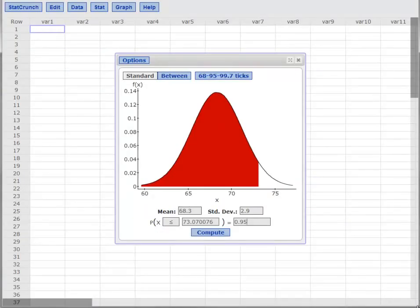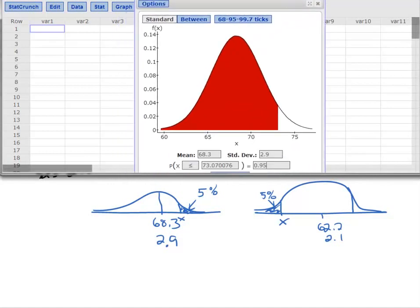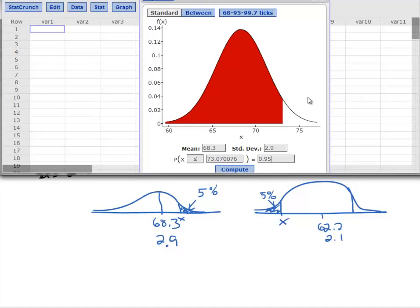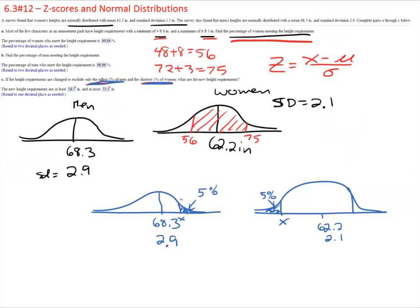So we will bring StatCrunch back up and I am going to shrink this up so we can see our picture and then move this up. Okay, so we will do the men first. They have a mean of 68.3, standard deviation of 2.9, but we want the probability, we want to know what is the cutoff so that x is greater than 5%. So you see the tail matches our picture. So that is saying if x is 73.07, that is going to be the cutoff. So this value here, this cutoff is 73.07, which we round to 73.1. That is the answer they wanted.